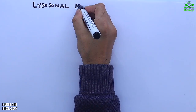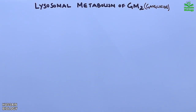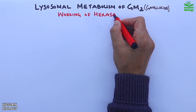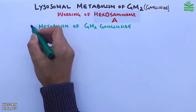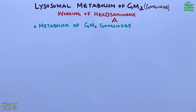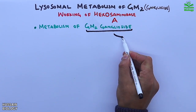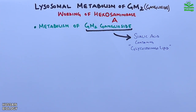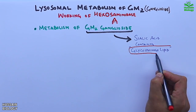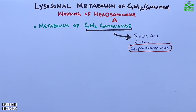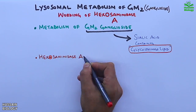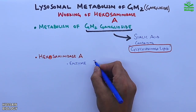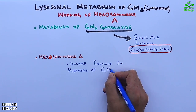In this video we will be discussing the lysosomal metabolism of GM2 gangliosides and the working of hexosaminidase A enzyme. The metabolism of GM2 ganglioside is driven in lysosomes. GM2 ganglioside is a sialic acid-containing glycosphingolipid — essentially a lipid molecule. This metabolism is driven by hexosaminidase A enzyme, which is involved in hydrolysis of GM2 to GM3.